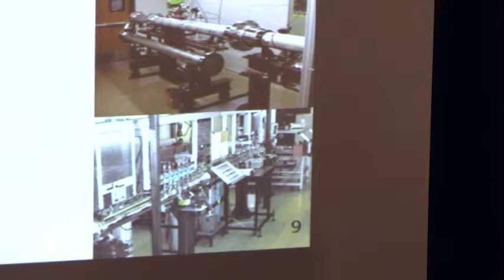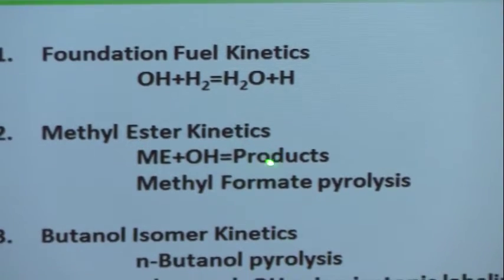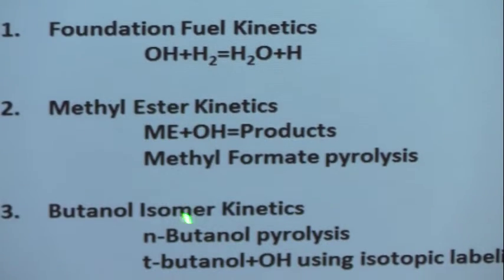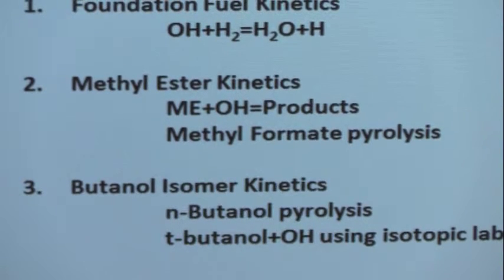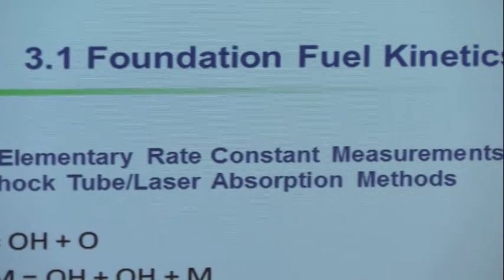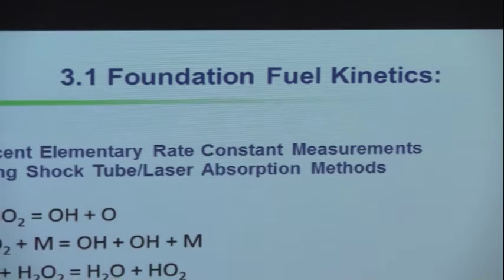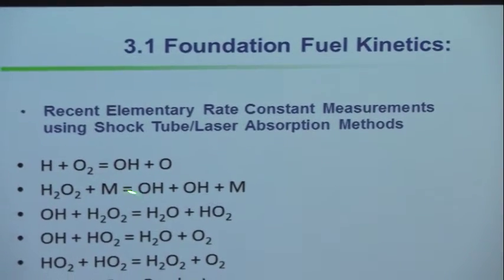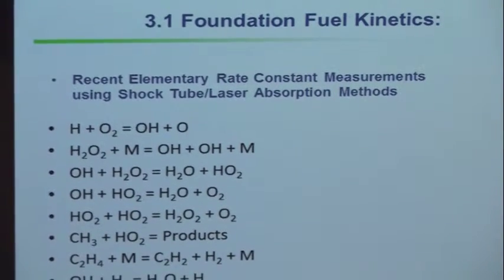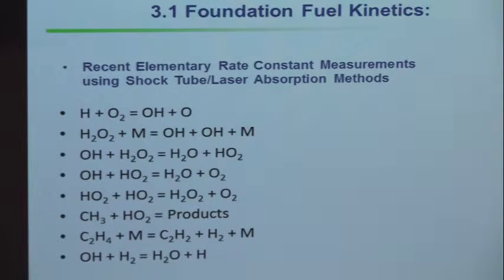I'm going to show you examples from what I call foundation fuel kinetics — specific elementary reactions. We try to look at individual reactions. The gold experiment is one in which you study something and measure a direct determination of the rate coefficient without ambiguity. They're the hardest to find because usually you have a mixture of species and a mixture of reactions. These are examples of elementary reactions we've studied over the last 20-30 years. Once you determine the rate coefficient with temperature, it's done — quite like measuring thermodynamic properties.